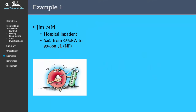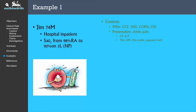Let's go through a couple of examples to put it all together. Jim is a hospital inpatient and you've been alerted by the nursing staff that the patient has suddenly become hypoxic, now requiring 3 litres of oxygen to maintain saturations at 90%. A review of Jim's medical history shows a past history of CCF, ischemic heart disease, COPD, and chronic kidney injury.